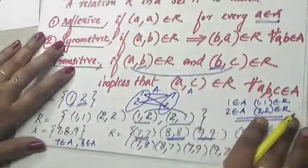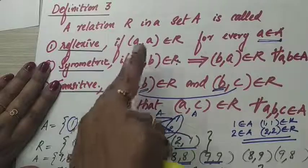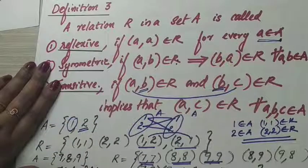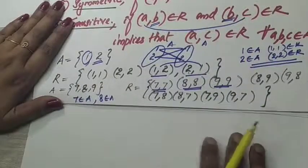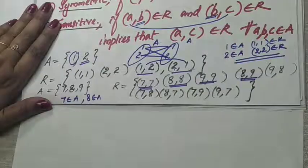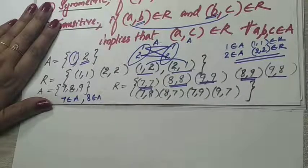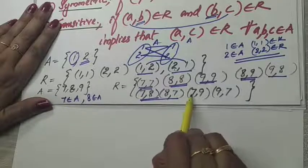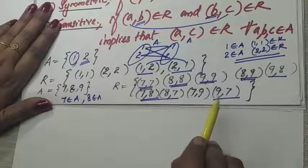Next, symmetric: if (A,B) belongs to R then (B,A) should also belong to R. Check: (8,9) is in the relation and (9,8) is also there. (7,8) is in the relation and (8,7) is also there. (7,9) is in the relation and (9,7) is also there. So we can say that this relation is symmetric.